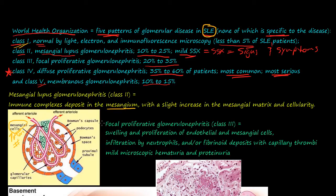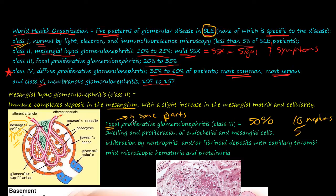The third one is focal proliferative glomerulonephritis. The name kind of gives it away — it's focal, meaning it's in some parts, not all of them. There needs to be less than about 50% involvement. You see swelling and proliferation of the endothelial cells and the mesangial cells.